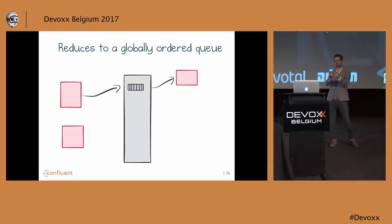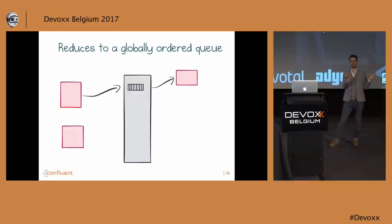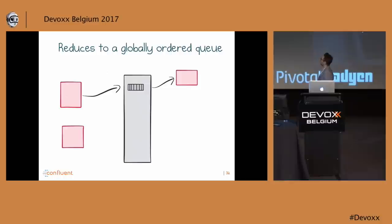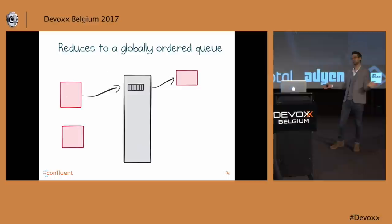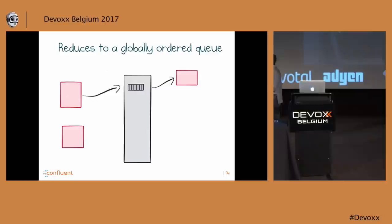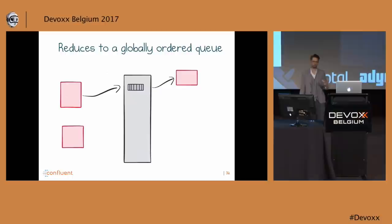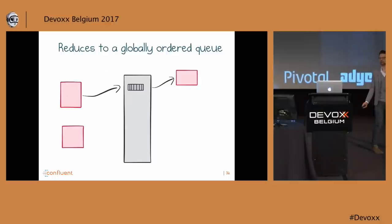If we're processing orders and an order has a lifecycle — created, validated, shipped — we want ordering guarantees across that lifecycle. We'd assign the order ID to the key so it's always routed to the same partition. If we need global ordering, we create a topic with a single partition — it runs on one machine, just like a normal message broker such as RabbitMQ. We sacrifice an element of scalability but get all the resiliency properties.